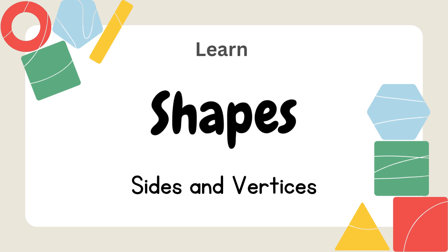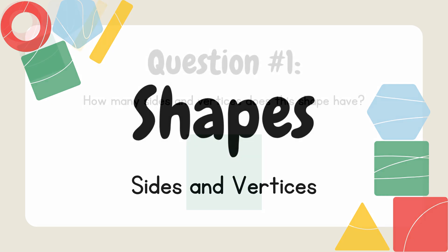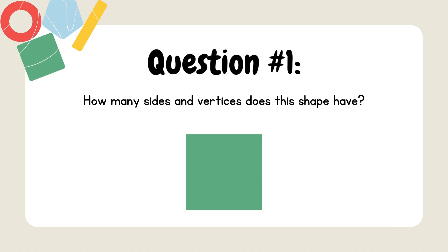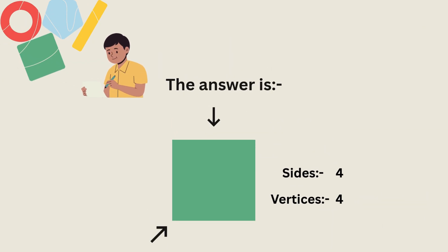Hello kids! Lex learns shapes with sides and vertices. How many sides and vertices does this shape have? The answer is sides equal to 4 and vertices equal to 4.